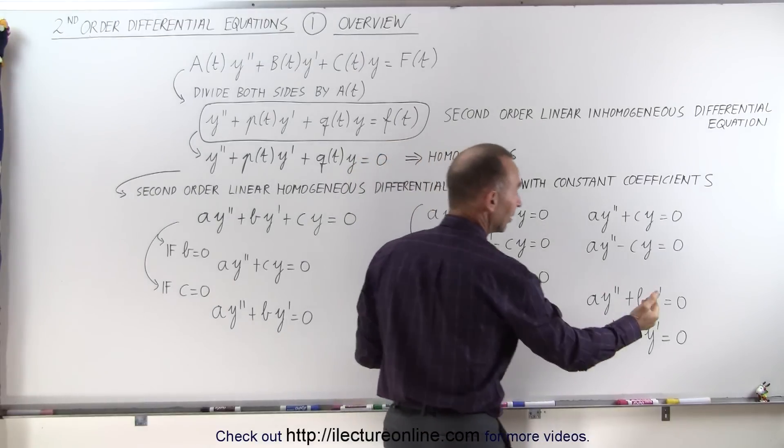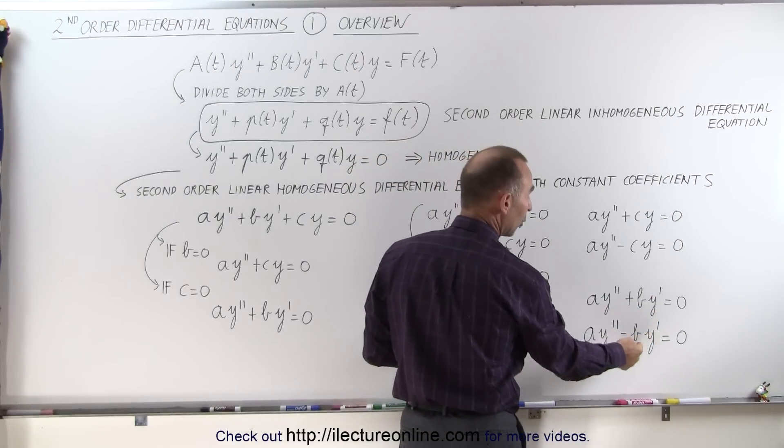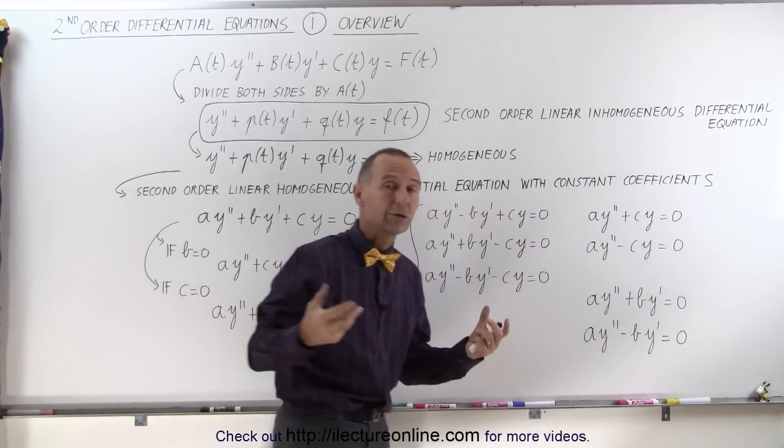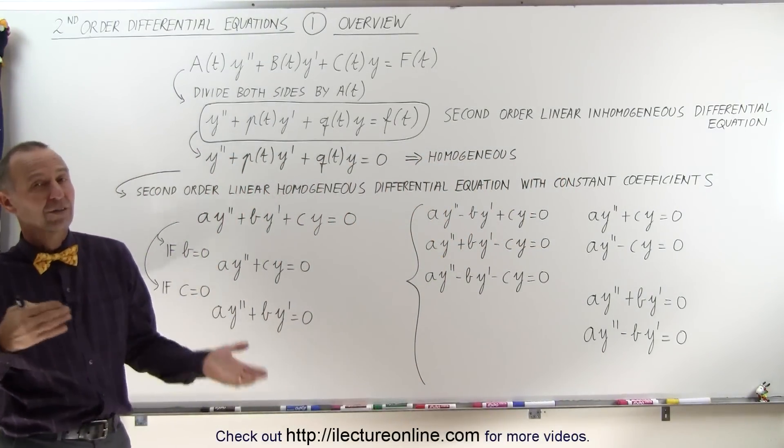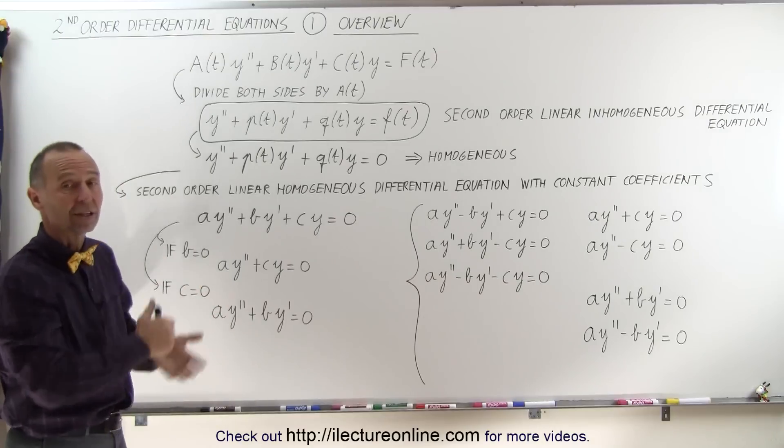And if c is equal to zero, you end up with a plus b or a negative b. And again, the solutions will look different depending upon the values of these constants, whether or not they're positive or negative, or whether or not they're even missing or not.